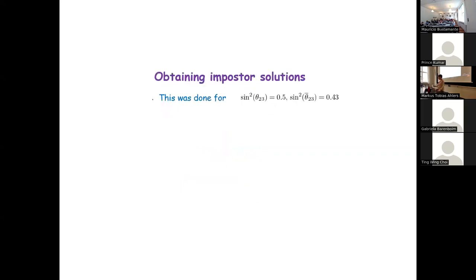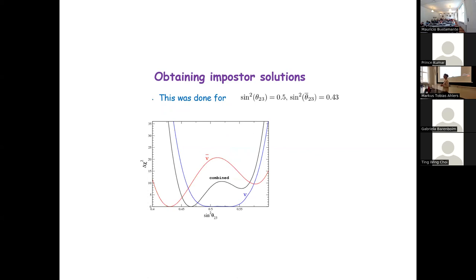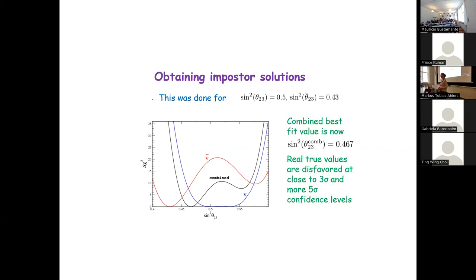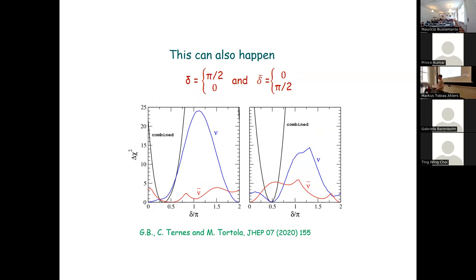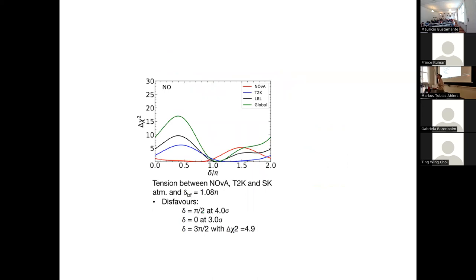Taking the sub-T2K central values as an example: if you do the combined fit — the black line — you end up excluding the true values in the neutrino and antineutrino sector at three and five sigma confidence level. This is something you cannot be doing. It's very, very dangerous — you are trying to do physics but getting the wrong answer. It can happen with the CP phase as well.